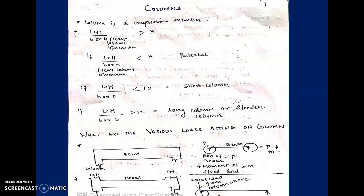Let us begin. As we all know, a column is a compression member. We have discussed in our previous classes what a compression member means and what a tension member means. From that previous knowledge we can conclude that a column is a compression member. Now, how do we define, according to the ratio of its dimensions, whether it is a column or not?